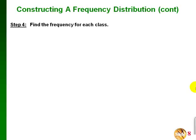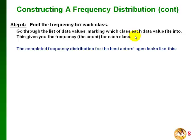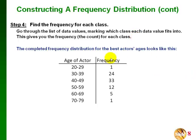The final step is to find the frequency for each class. Go through the list of data values and mark which class each one fits into — you can use tick marks to count. Our completed frequency distribution shows: age class 20–29 had 1 actor, 30–39 had 24, 40–49 had 33, and so on. Notice there was only 1 in the 70–79 age category.